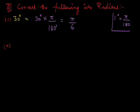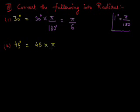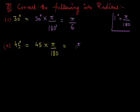Let's take another example: convert 45 degrees into radians. We know that 1 degree equals pi by 180 radians. So 45 degrees equals 45 into pi by 180. Since 45 times 4 equals 180, it simplifies to pi by 4.